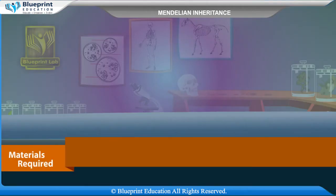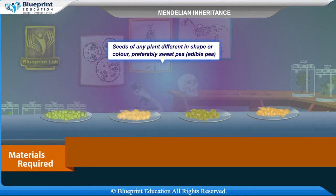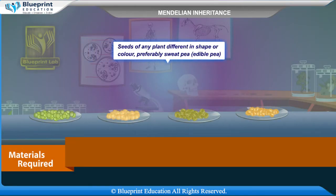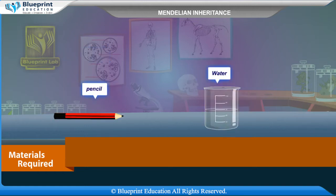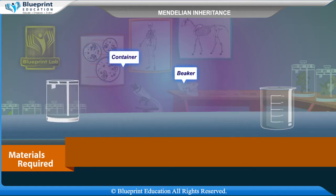Materials required are: seeds of any plant different in shape or color, preferably sweet pea or edible pea, hand lens, notebook, pencil, and water.